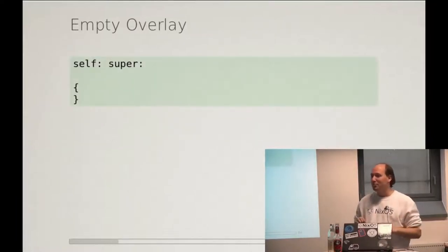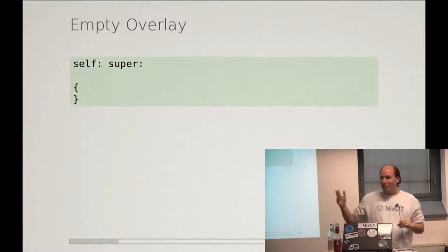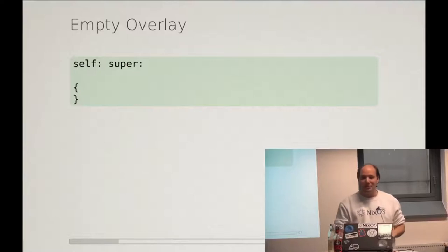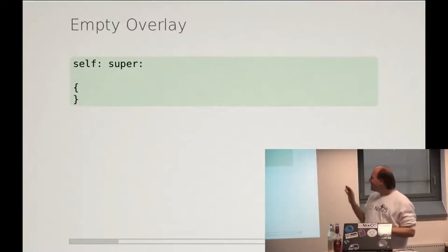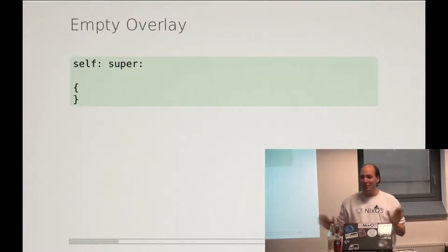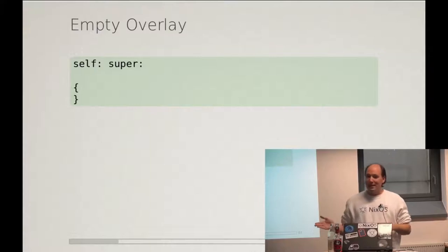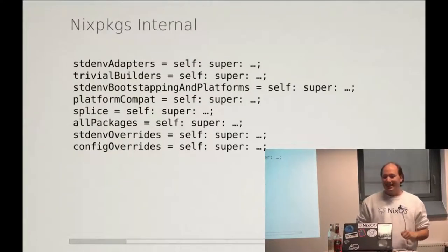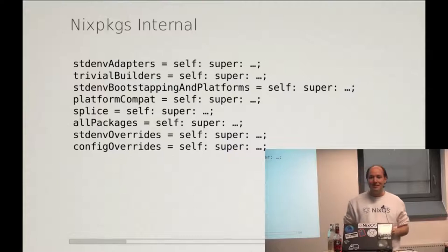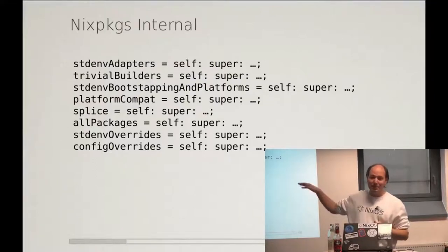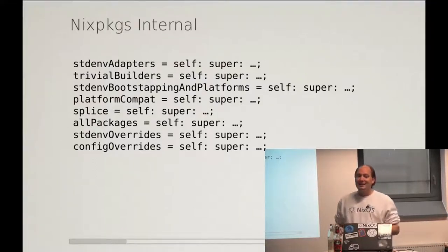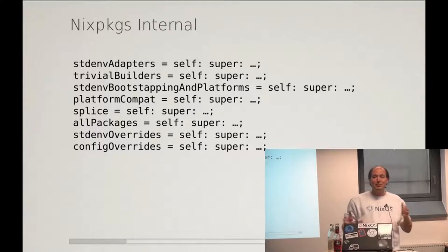I will go through multiple examples and after a while I will ask you to solve some of them. This is the simplest overlay you can make — it takes two arguments, self and super, and you give it an empty set, extending NixPackages with nothing. Overlays are not just made-up things; they are actually the internals of NixPackages. NixPackages is using the overlay system — except it's doing a mess — to stage the different levels of NixPackages that we currently have.